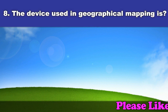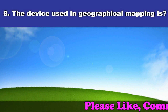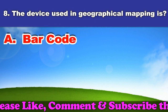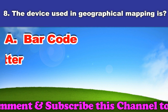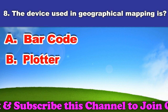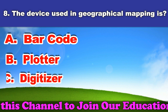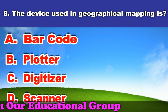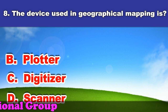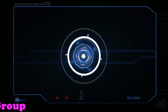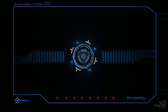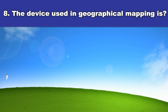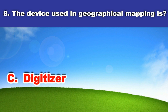Eighth question: The device used in geographical mapping is. A. Barcode. B. Plotter. C. Digitizer. D. Scanner. And the answer is digitizer.